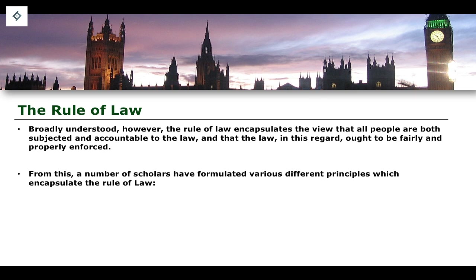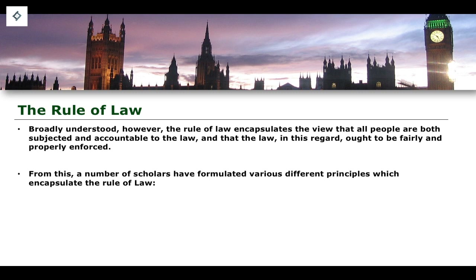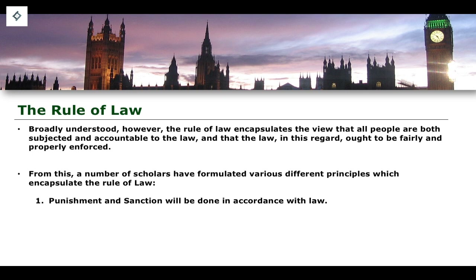Theorists and scholars from Dicey to Joseph Raz have all come up with ideas relating to the substantive principles of the rule of law. In terms of a general consensus, the rule of law generally requires that punishment and sanction be done in accordance with law and not on some arbitrary basis. The punishment and sanction of an individual by the state should not be done on the basis of some arbitrary rule or the whims of a particular leader — it should be done in accordance with due process of law and the application of legal principles.